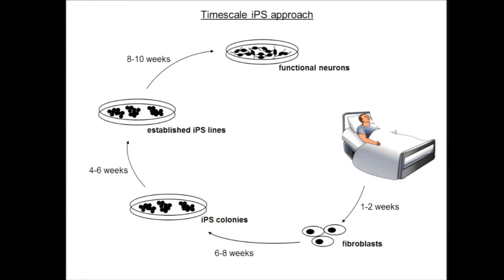Putting everything in a nutshell: the original iPS cell idea involves taking biopsies from a patient, doing reprogramming, picking colonies, establishing a well-characterized iPS cell line, and then differentiating them into functional neurons for studying neuronal disease. All these steps are associated with a lot of time, money, and effort. It would be great if the fibroblast-to-functional neuron conversion could, at least for some applications, replace this very laborious approach.